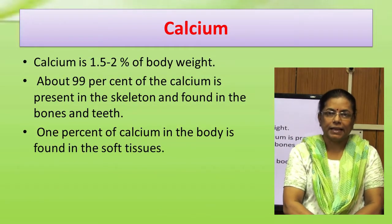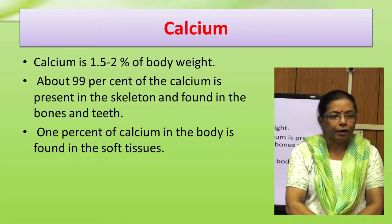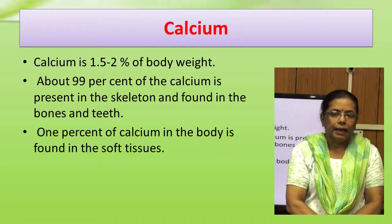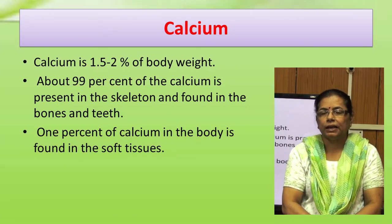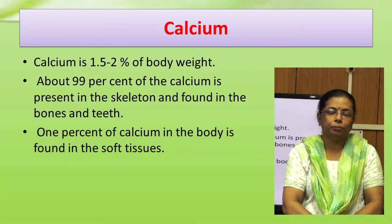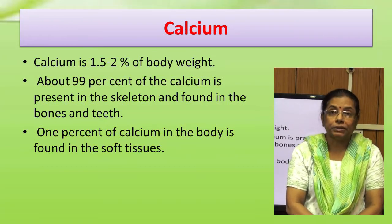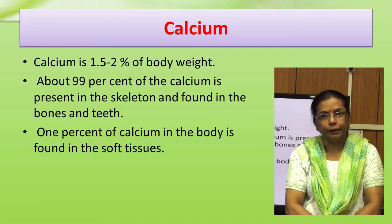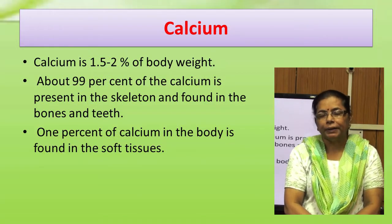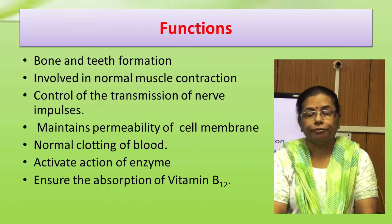Now we will study calcium. It is a macromineral. 1.5 to 2% of body weight consists of calcium, meaning 1600 to 2000 g of a typical adult human body consists of calcium. 99% of this is present in bone and teeth, and 1% of calcium is found in body fluids and soft tissue.